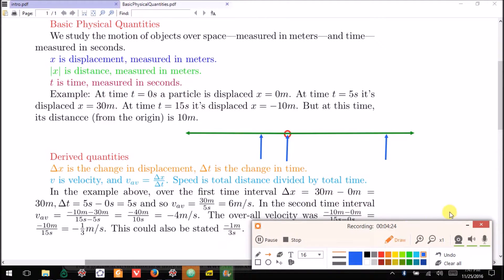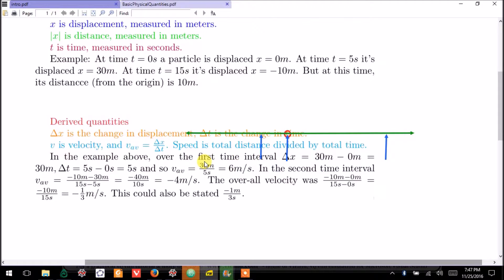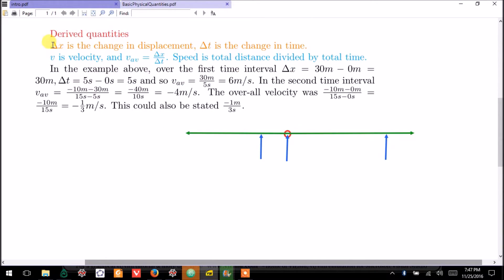From here, we can describe these derived quantities. Delta x is the change in the displacement, and you could say that it is the final displacement. So in the first instance, its final displacement was 30 minus its initial displacement, which was zero. And so it had a delta x value of 30 meters. It had a delta t measure of 5 seconds.